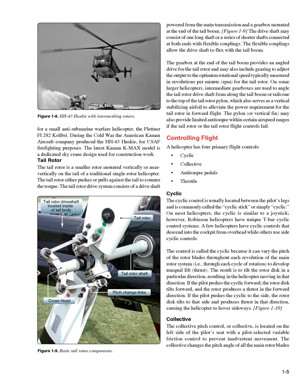Controlling Flight. A helicopter has four primary flight controls: cyclic, collective, anti-torque pedals, and throttle. The cyclic control is usually located between the pilot's legs and is commonly called the cyclic stick or simply cyclic. On most helicopters, the cyclic is similar to a joystick; however, Robinson helicopters have unique T-bar cyclic control systems. A few helicopters have cyclic controls that descend into the cockpit from overhead, while others use side cyclic controls. The control is called the cyclic because it can vary the pitch of the rotor blades throughout each revolution of the main rotor system — through each cycle of rotation — to develop unequal lift and thrust.